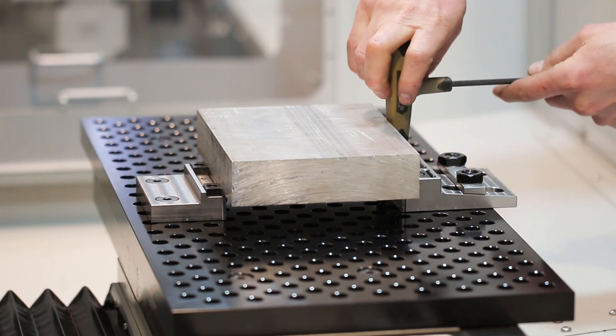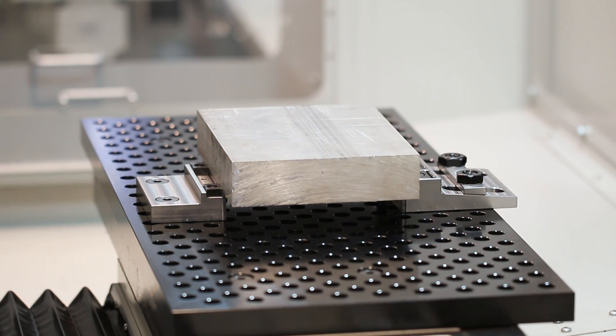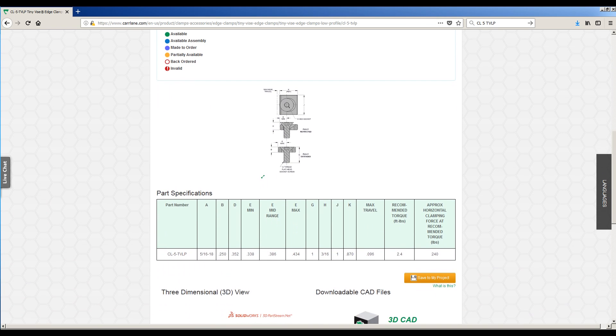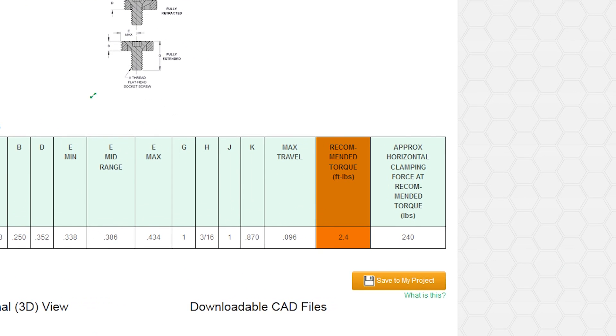You can use a hand tool but we always recommend a torque wrench when possible. Car lane recommends 2.4 foot-pounds. We've been tightening them down to about 70 inch-pounds which is just under 6 foot-pounds.